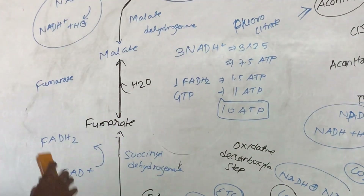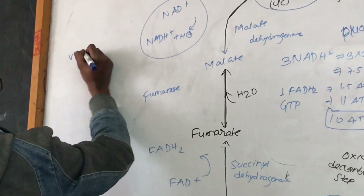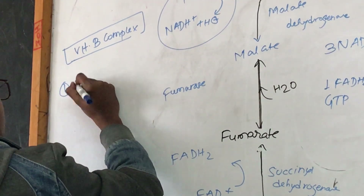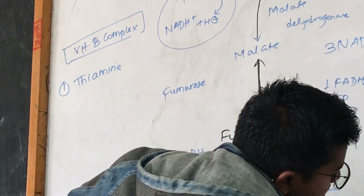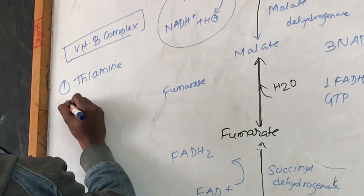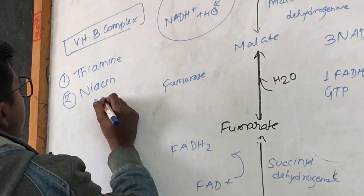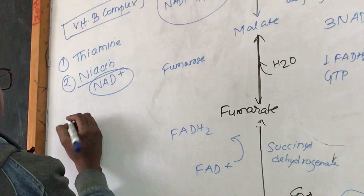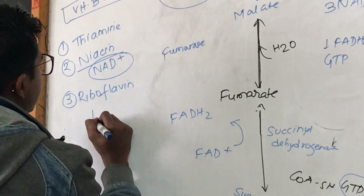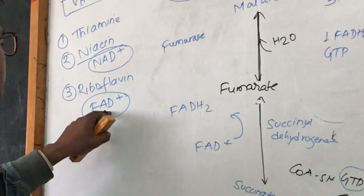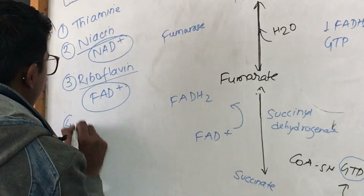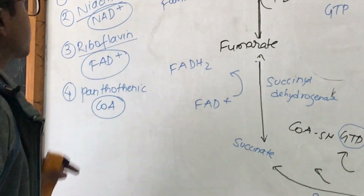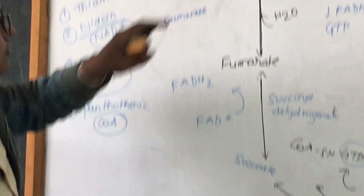What vitamins are mainly associated with the Krebs Cycle? Vitamin B complex is associated with the Krebs Cycle. The vitamins involved are: first, thiamine, which is mainly associated with alpha-ketoglutarate dehydrogenase. Second, niacin — whenever NAD+ is used or regenerated, niacin is involved. Third, riboflavin — whenever FAD (flavin adenine dinucleotide) is involved, riboflavin is involved. Fourth, pantothenic acid, which is involved through coenzyme A. So four vitamin B complex vitamins are used in the Krebs Cycle.